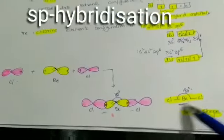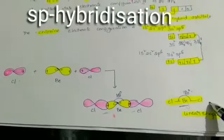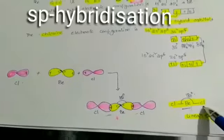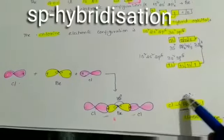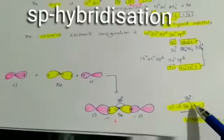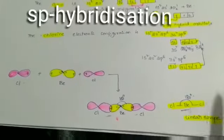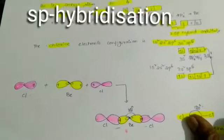As shown in the figure, beryllium chloride has a linear shape with a bond angle of 180 degrees. The next hybridization to be discussed is SP² hybridization.